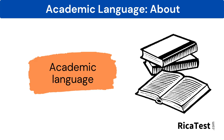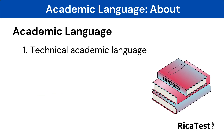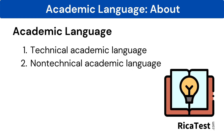Academic language is the language used in the classroom, and it's found in textbooks and tests. There are two types of academic language. The first is technical academic language, which includes domain-specific words — words you might find in a social studies book, such as sovereignty, monarchy, or tyranny. The second type is non-technical academic language, which are words used across multiple disciplines. Example words include theory, hypothesis, analysis, and synthesis.